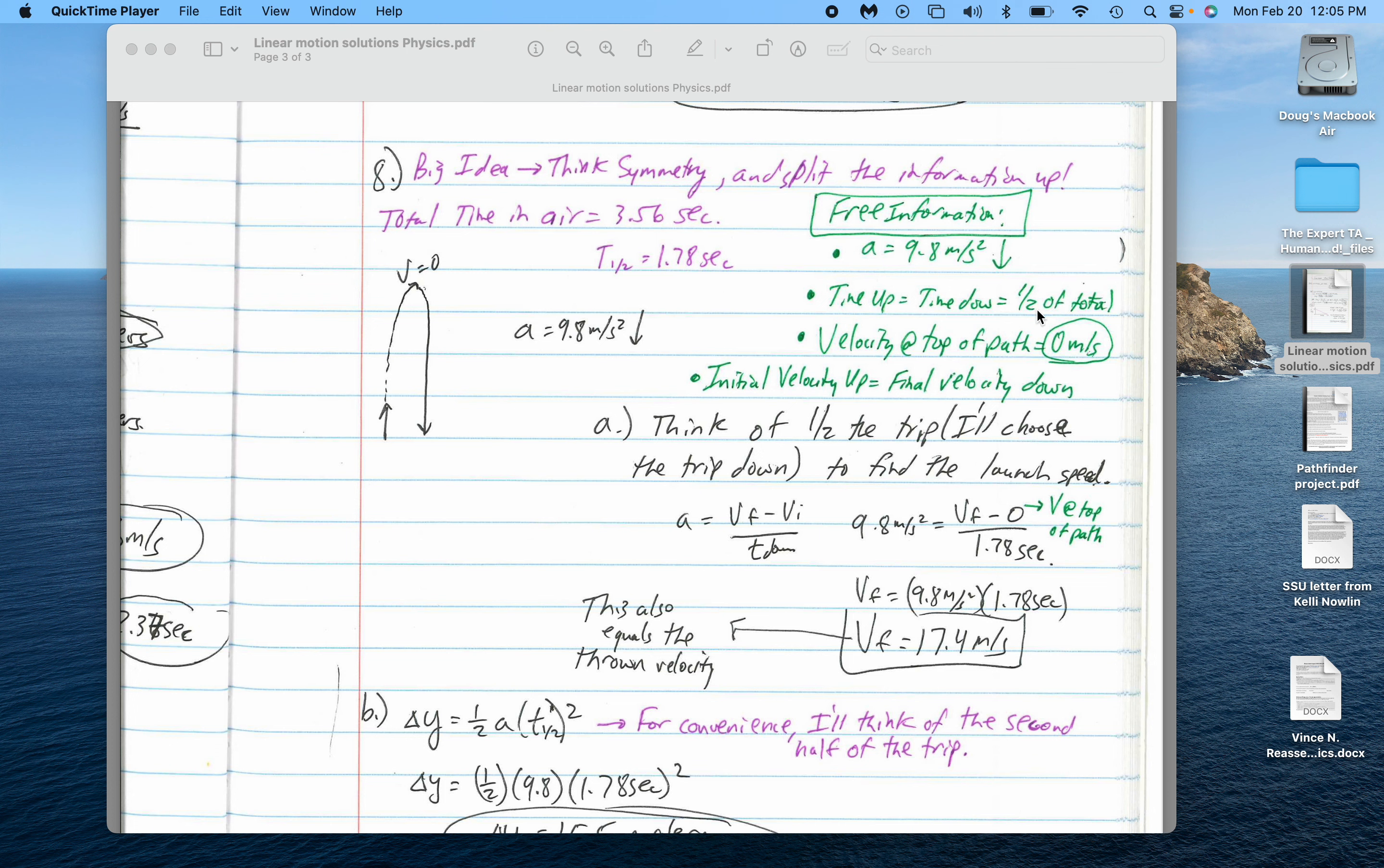The time up would equal the time down if it's going to be hitting the ground again. That means that's half of the total time. That's free information. Velocity at the tippy top of its path is 0 meters per second. We saw that with the ball toss lab. Free information.